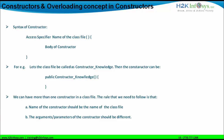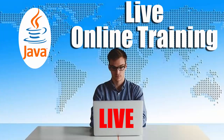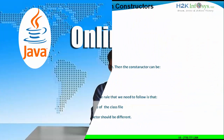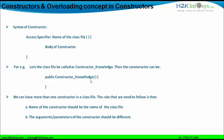We can have more than one constructor in a class file. The only rule is that you should have different arguments. A constructor can have arguments within the parenthesis just after the constructor name. If we can have different arguments, we can have more than one constructor in a particular class file. The example shown is a no-argument constructor because there is no argument defined within the parenthesis. The constructor name here is 'constructor_knowledge'.